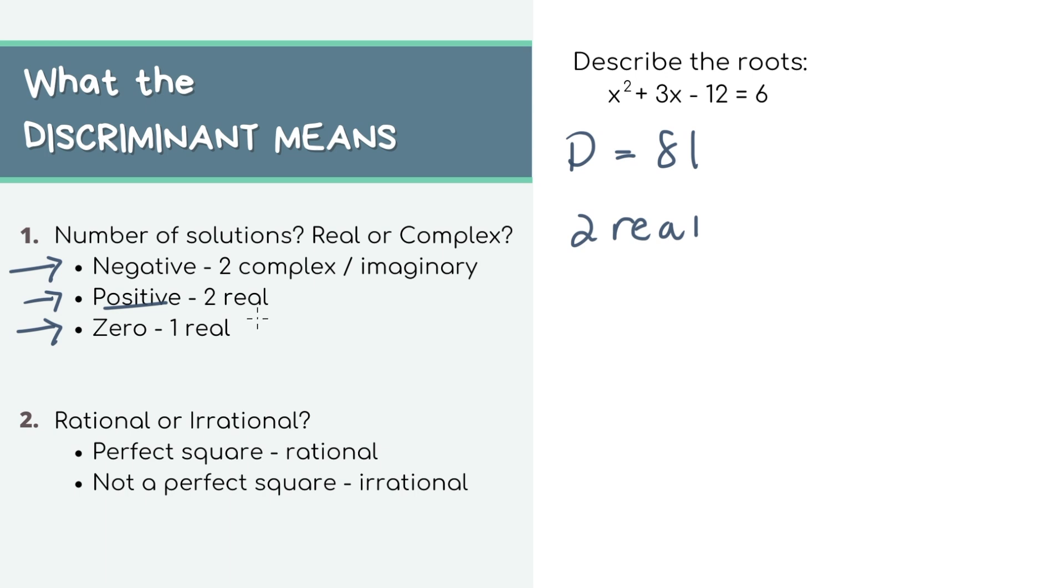If you have a positive discriminant, you can also take it one step further and tell if your solutions are rational or irrational. If the discriminant is a perfect square, like 4, 9, 16, etc., it means that your solutions will be rational. On the other hand, if the discriminant is not a perfect square, then your solutions are irrational.